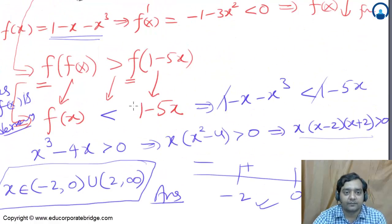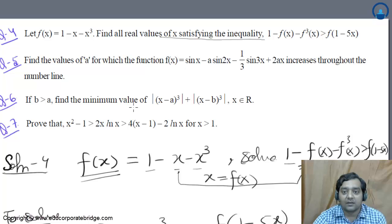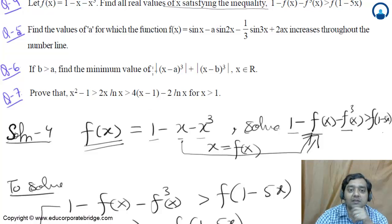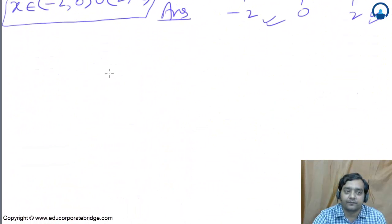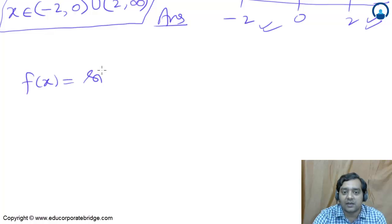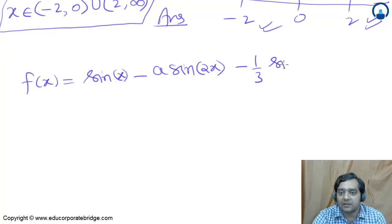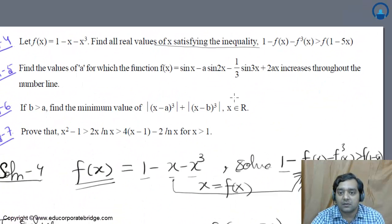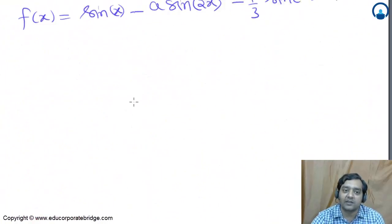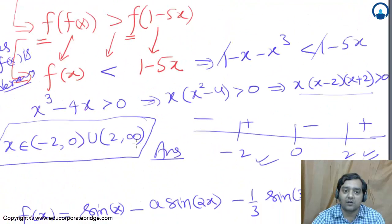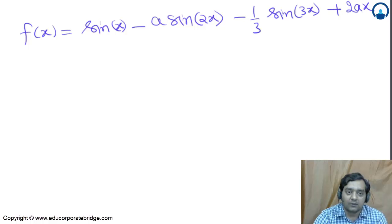That was question number 4, a simple question. Now moving to question number 5, which says: find the value of a for which the function f(x) = sin x - a sin 2x - (1/3) sin 3x + 2ax is monotonically increasing.